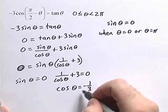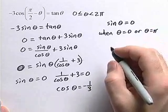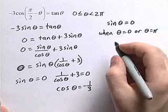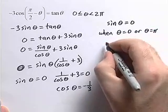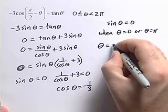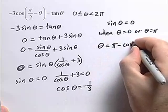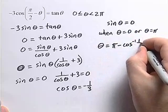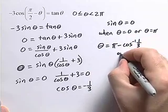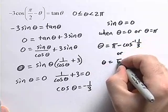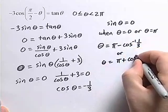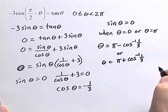Now cosine theta is equal to negative 1 third in quadrants 2 and 3. If we solve that, we'll know that theta is equal to pi minus cosine inverse of 1 third, or theta is equal to pi plus cosine inverse of 1 third.